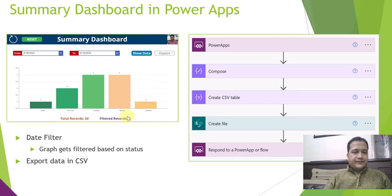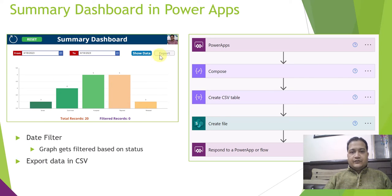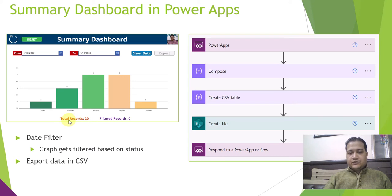This is the kind of graph I am going to show you today. It has filtering functionality — using the Show Data button you can filter the data in the graph. There is also export functionality to export data as a CSV file, a Reset button to reset the graph data, and labels at the bottom showing total records and filtered records. That is the kind of summary dashboard or summary report you can prepare for your clients.